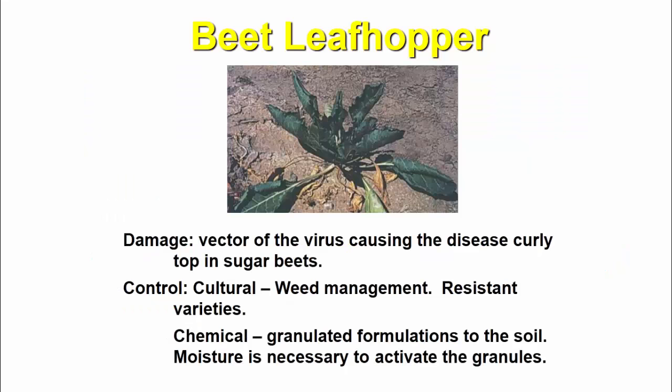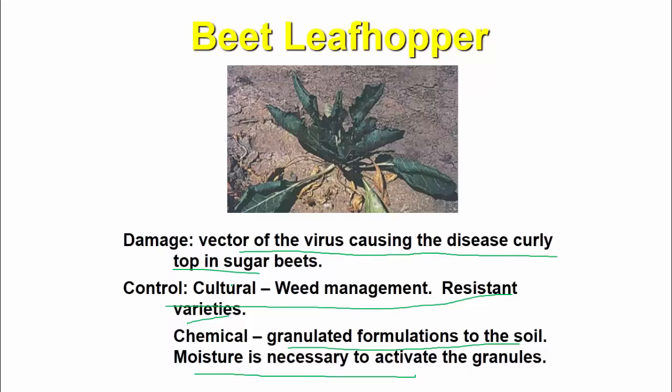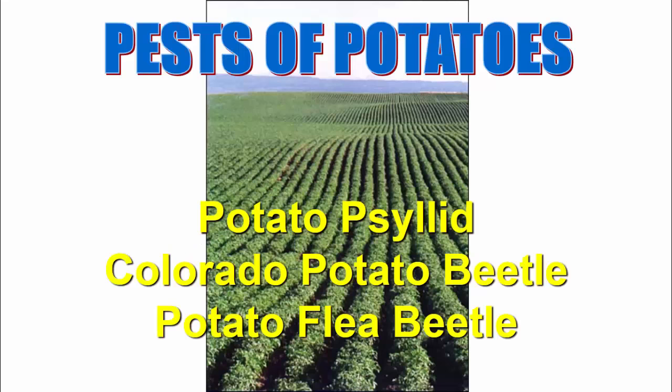The beet leafhopper is a vector of the virus causing curly top disease in sugar beets. Control includes cultural weed management and resistance varieties. Chemicals and granules applied to the soil require moisture to activate the granules.